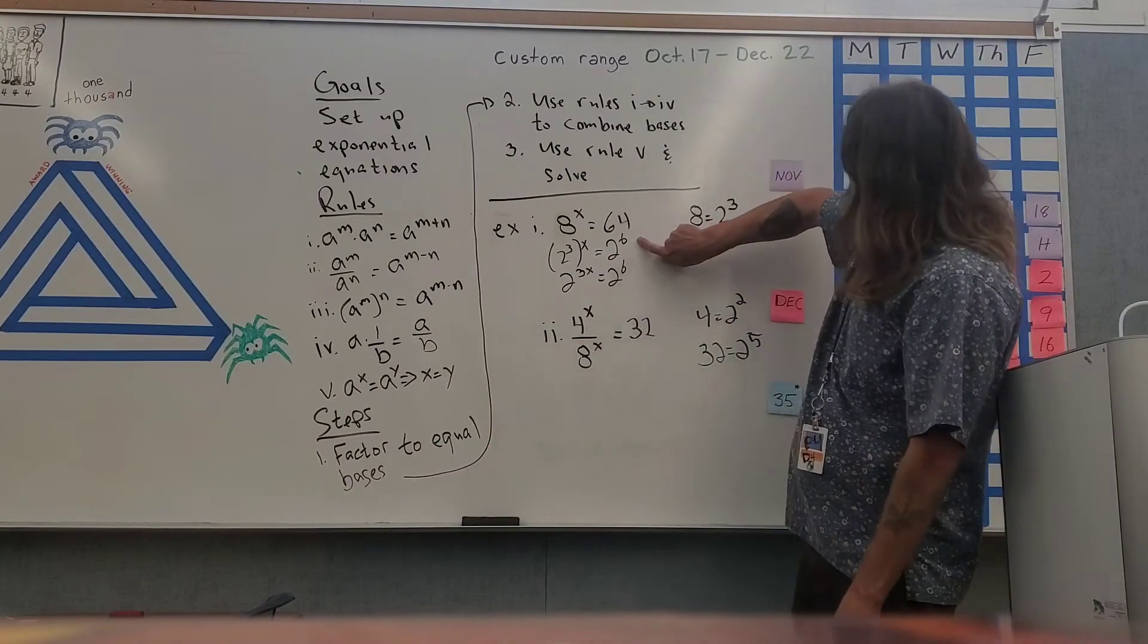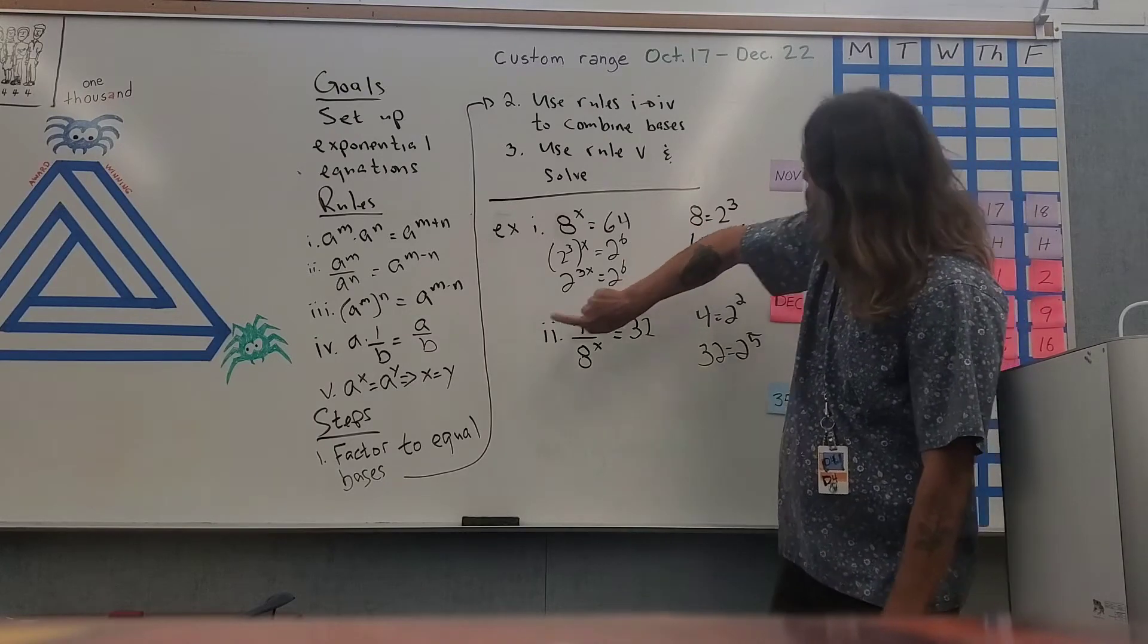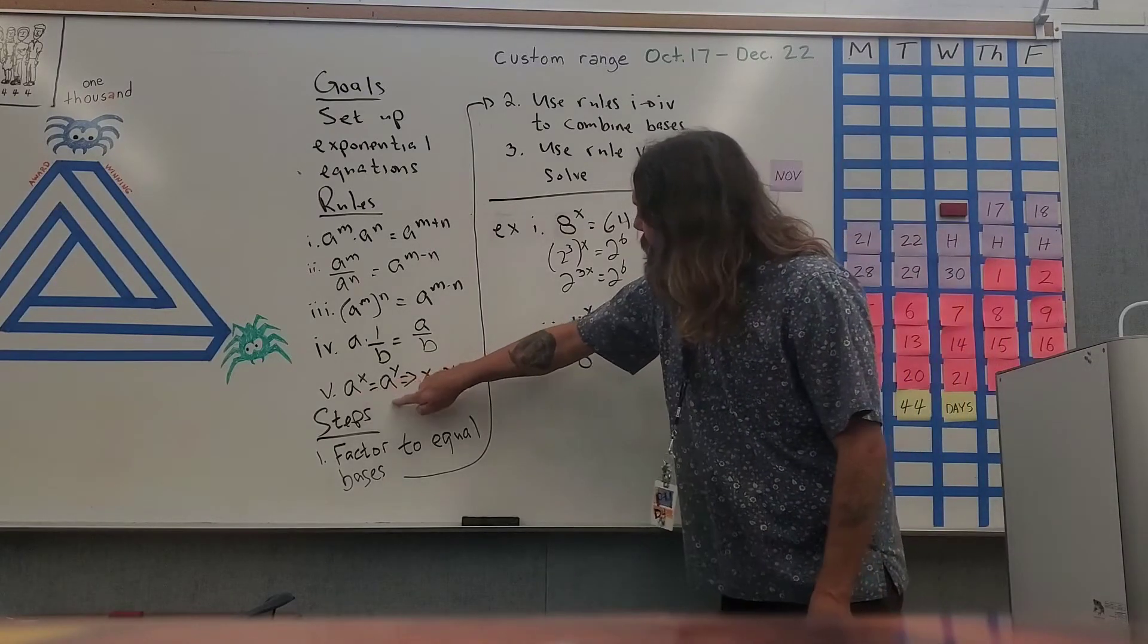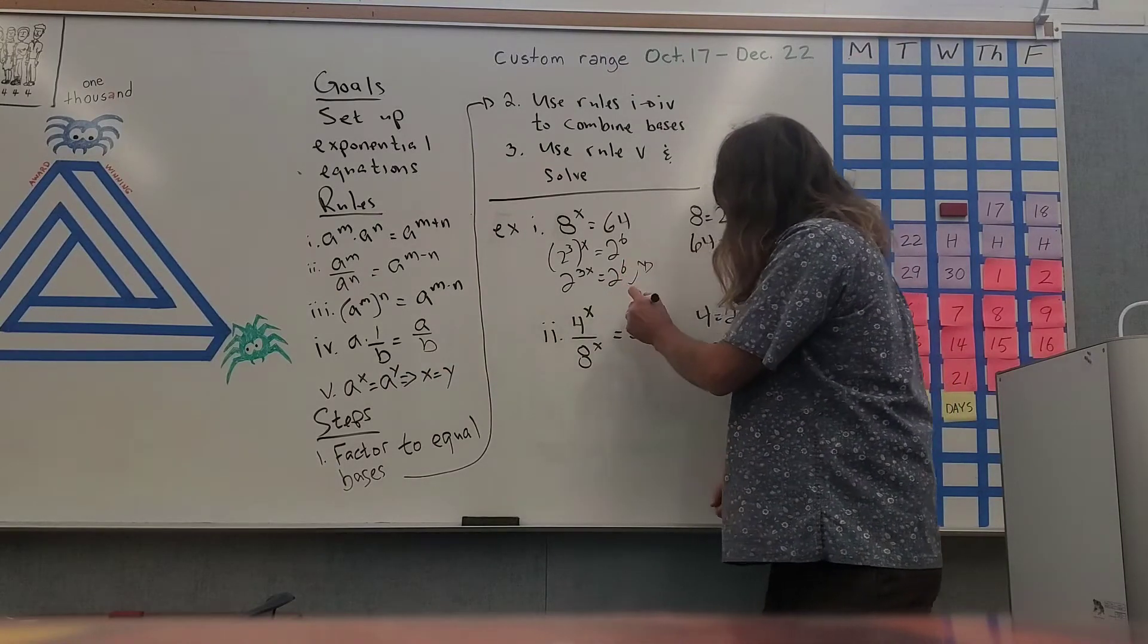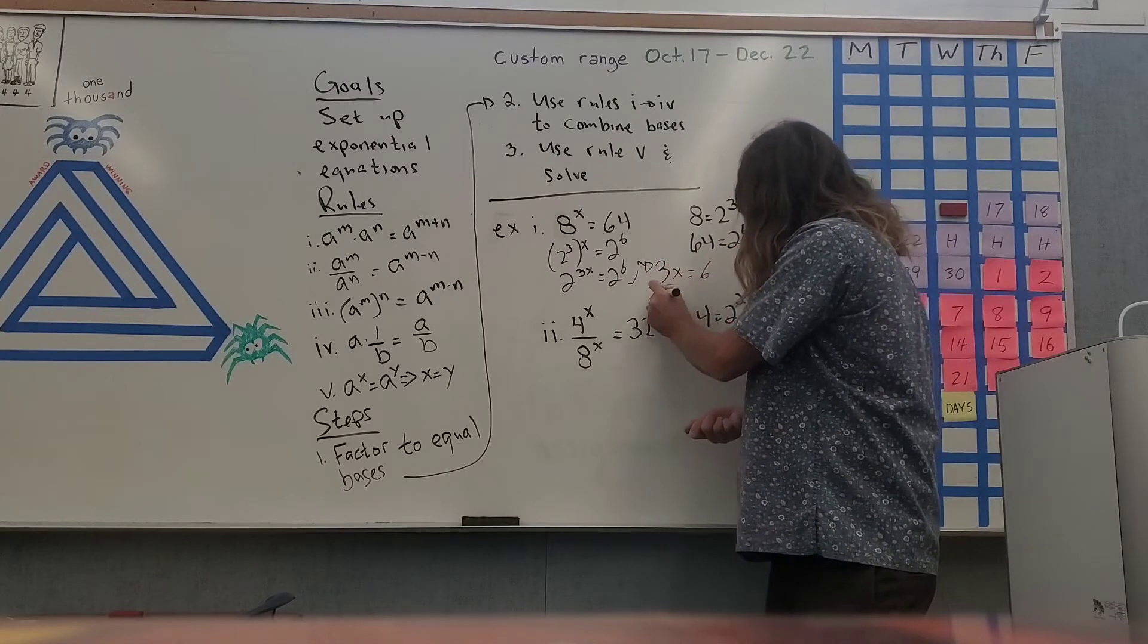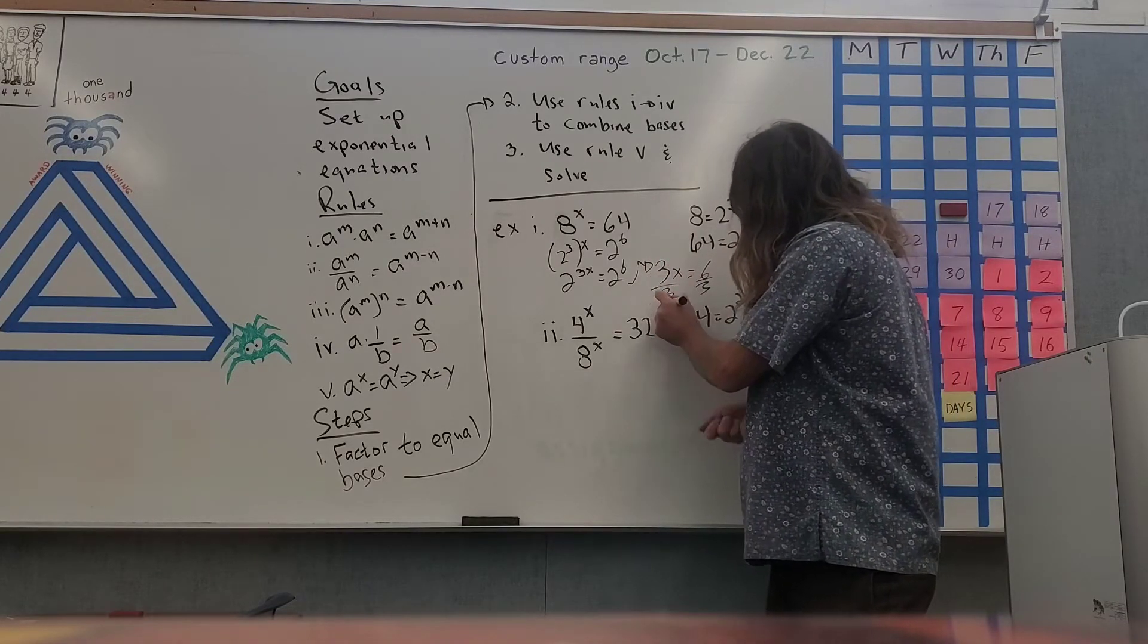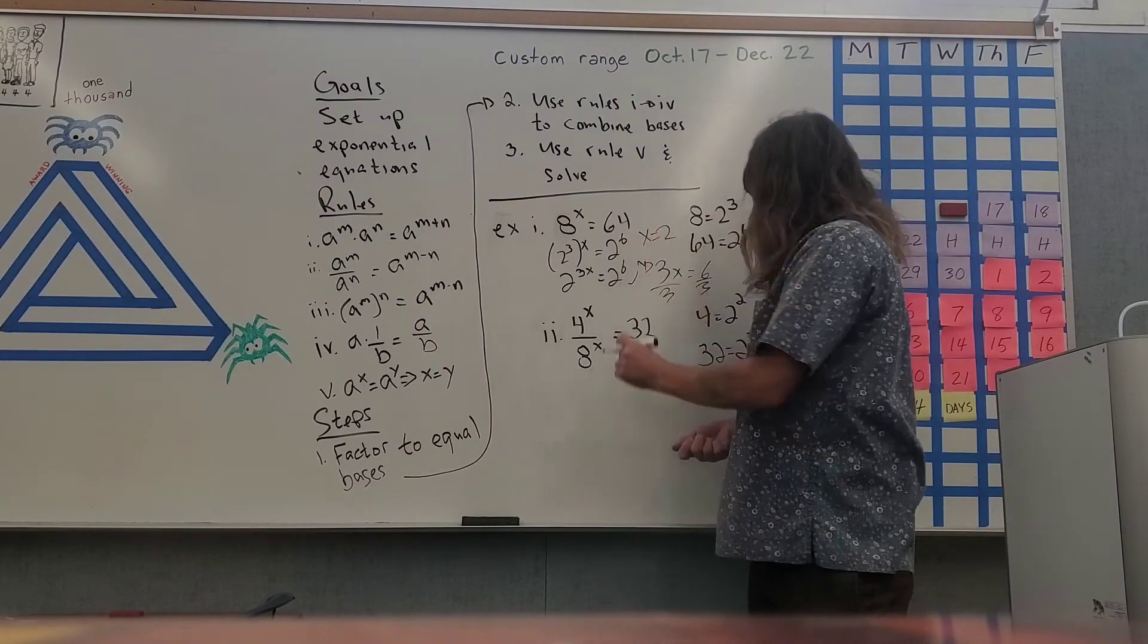I use rules two through four to combine my bases, and now I'm going to use rule five, which says if I have equal bases, the exponents must be equal. So now I get three x is equal to six, divide out three, so my solution to the first problem is going to be x is equal to two.